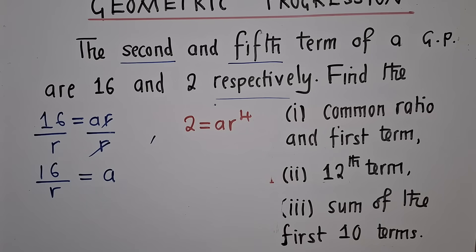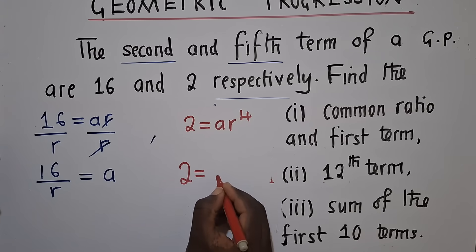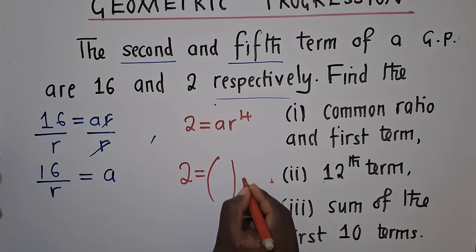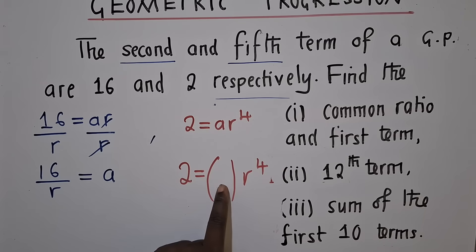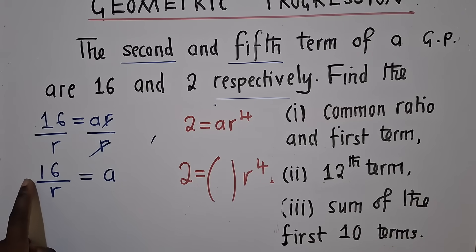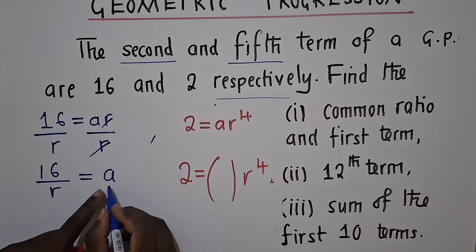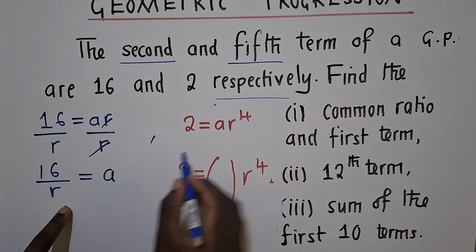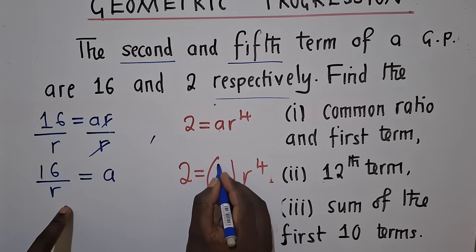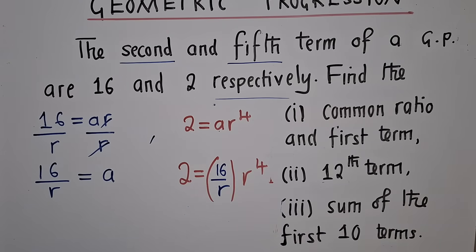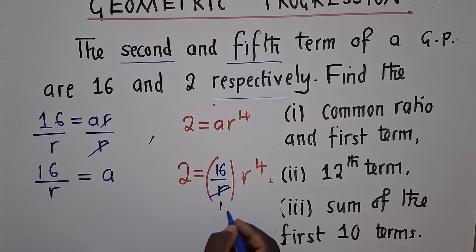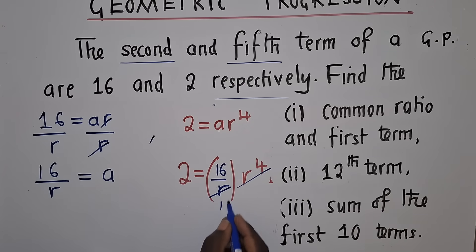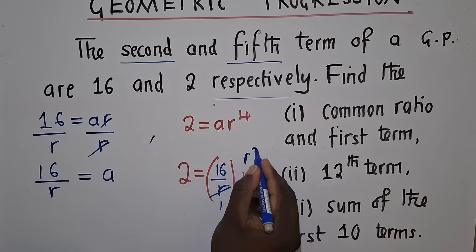We now substitute. Can you guess what we're going to put inside here? We're going to put 16 over R, because we're saying A is equal to this. So where A is here, we're going to write 16 over R. We can divide R into R power 4. That's R power 3.